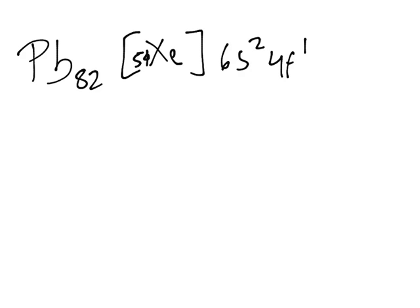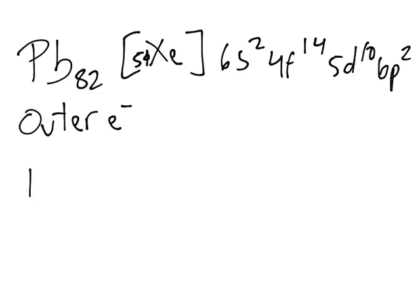I'm guessing you know how to write the electron configuration, so I'll do that really quickly. We have Xenon, that's the closest one, and that is 54. Then we have 6s2, 4f14, 5d10, and 6p2. So let's start with outer electrons, then inner, and valence.